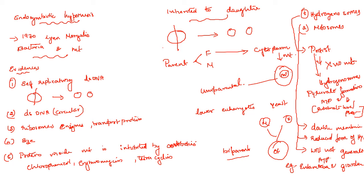Further evidence: protein synthesis inside mitochondria is inhibited by certain antibiotics — the same antibiotics that inhibit bacterial protein synthesis — such as chloramphenicol, erythromycin, and tetracycline. This supports the idea that mitochondria evolved with an endosymbiotic nature and was adapted into the eukaryotic cell.